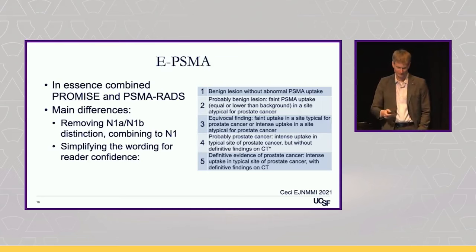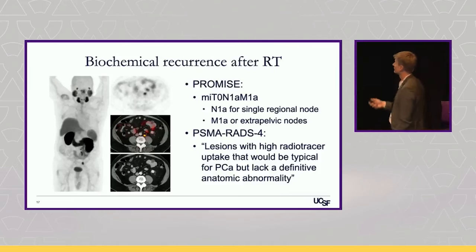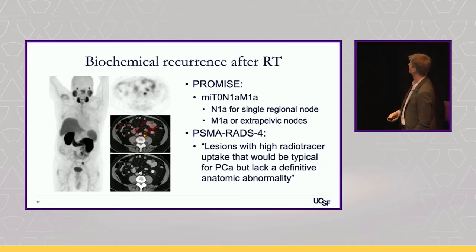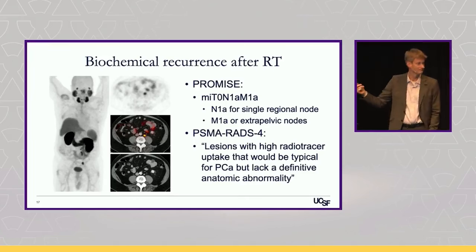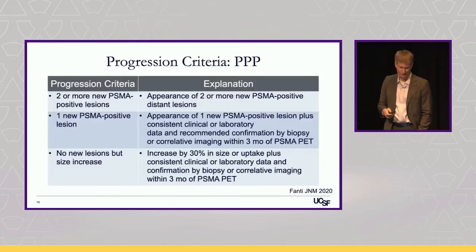Here's a clinical example: biochemical recurrence after radiation therapy. You can see a retroperitoneal lymph node — PSMA avid — which does not meet size criteria for metastatic disease on CT, so you need the PSMA uptake to identify it. In PROMISE it would be miT0 N1 M1a — N1a for a single regional node in some versions, M1 for the extra-pelvic nodes, with a second node in the pelvis. In PSMA-RADS it would just be PSMA-RADS 4, which I don't find clinically beneficial for the referring clinician. That's why I find PROMISE more helpful for staging.